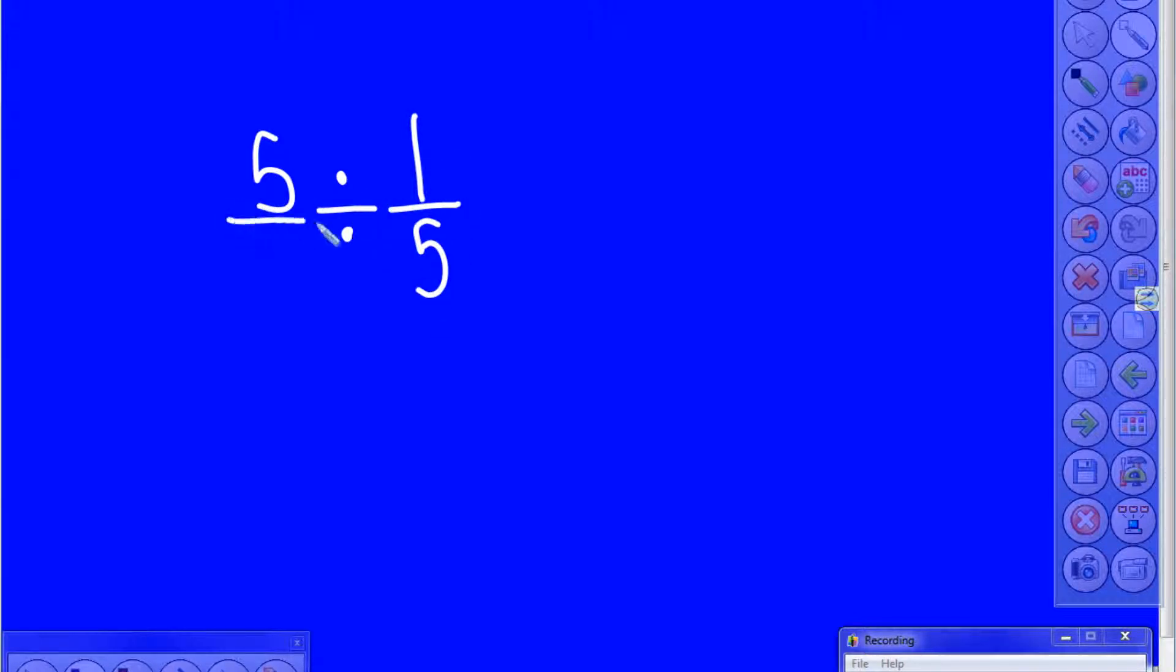But we're going to put this over 1 because it makes it the same value. It's just easier to multiply and divide fractions using it over 1. We can always put a whole number over 1 and make it the same. So this is our 5 hours and it's divided by our 1 fifth hours to know how many 1 fifth hours are in 5 hours.